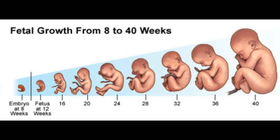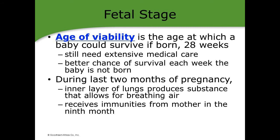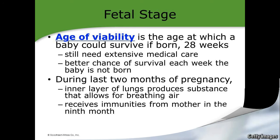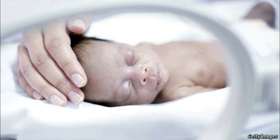The fetal period is when the finishing touches are put into place — a time of refinement, maturation, and growth of the organ systems. By 22 to 28 weeks, most systems function. Because of this, if it becomes necessary for the baby to be born prematurely, there is a chance of survival at this point. This is called the age of viability.